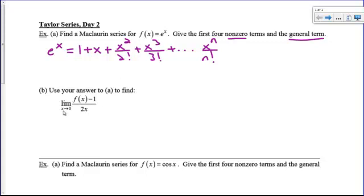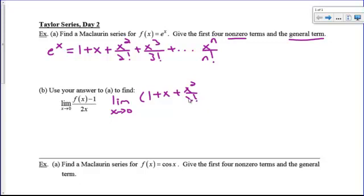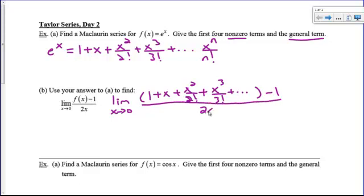So now let's use our answer to find the limit as x approaches zero of f of x minus 1 over 2x. We're going to actually do this algebra on our power series and see what happens. I'm going to write down what this would be: the limit as x approaches zero, and I am told to use our Maclaurin series as my f of x.